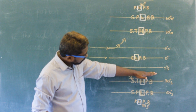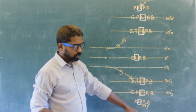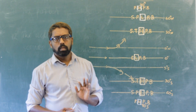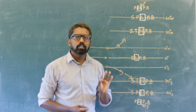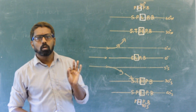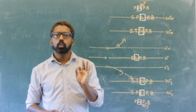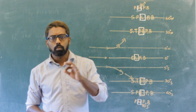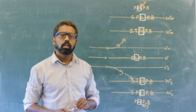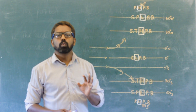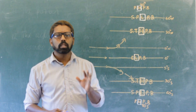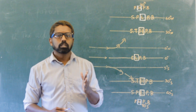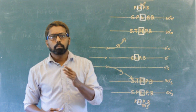The pressure belts shift northward during the period of the sun's northward progression and towards the south during the period of its southward progression.